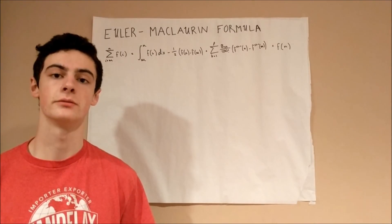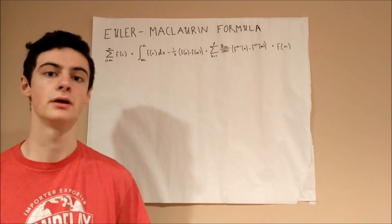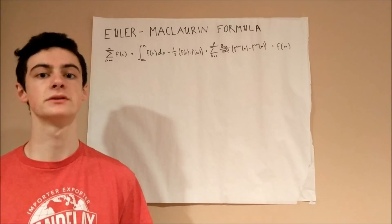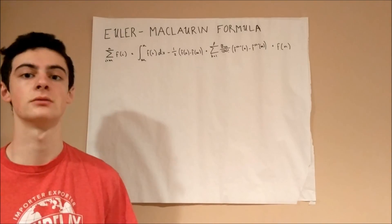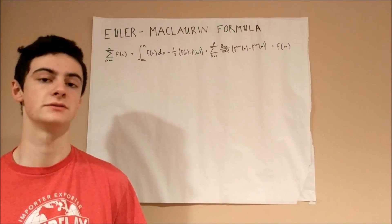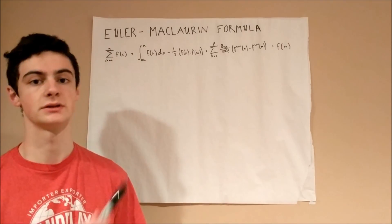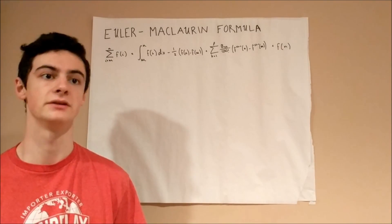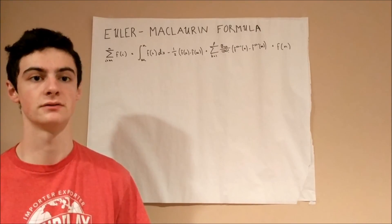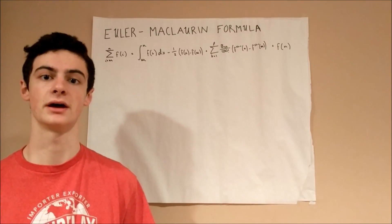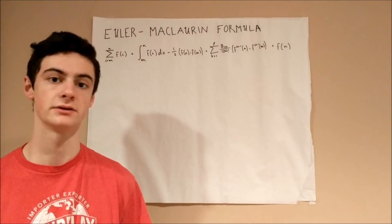The Euler-Maclaurin formula was discovered independently by Euler and Maclaurin. It's a way to solve the summation of any function. While Faulhaber's formulas can only solve summations involving polynomial functions, this formula can solve it for any function. Of course, it does work better if the function has a derivative that terminates to a constant value.